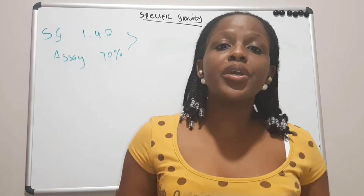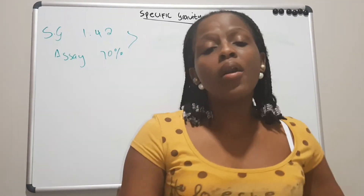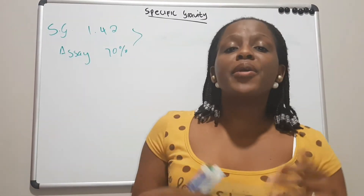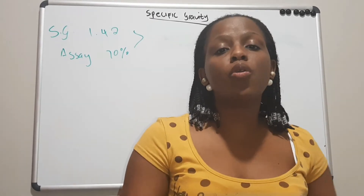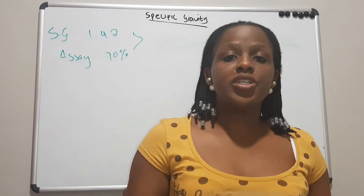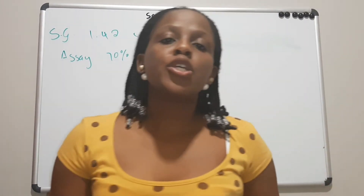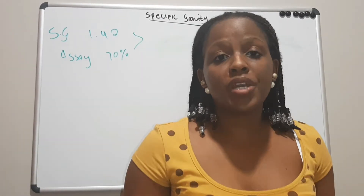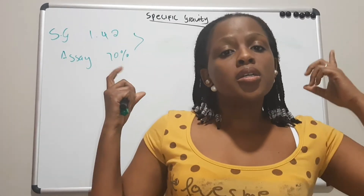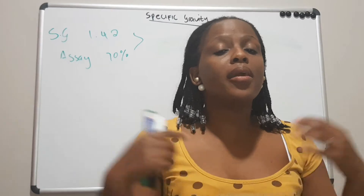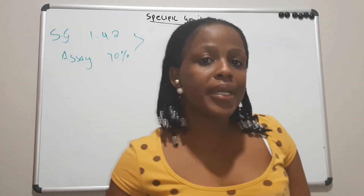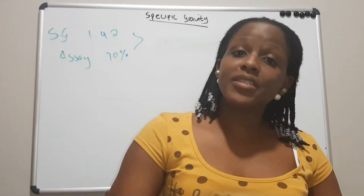Today we are continuing with the preparation of solutions, but we are doing concentrated bases or acids. What usually happens is that when bases and acids are manufactured, they are manufactured on the basis of weight over weight. Because of this weight-over-weight situation, it makes it impractical for us to weigh these solutions when preparing the percentages and concentrations we want to use.